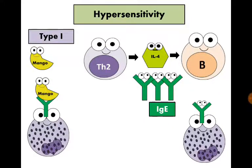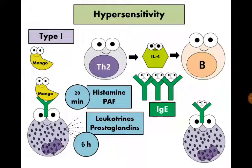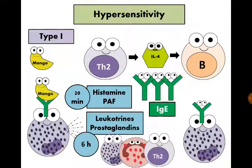Mediators are released within 20 minutes, like histamine and platelet activating factor. Basophils also start the synthesis of leukotrienes and prostaglandins that are secreted six hours later. With the stimulation of basophils, eosinophils, and T helper 2 cells, what will happen?